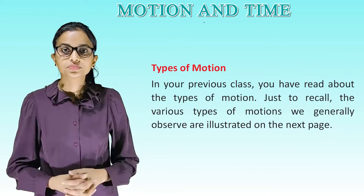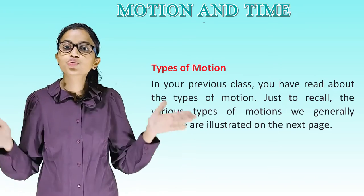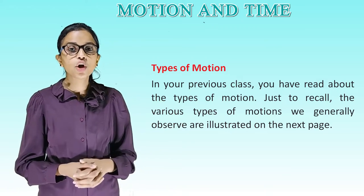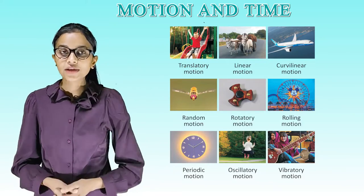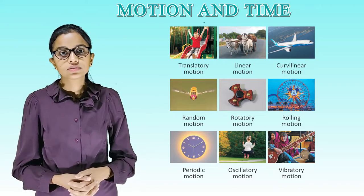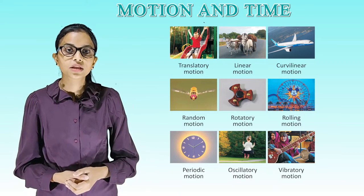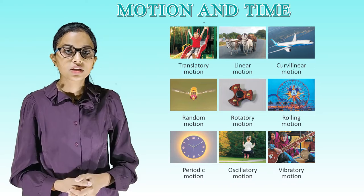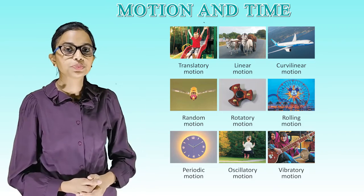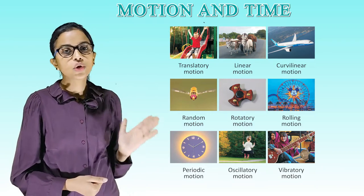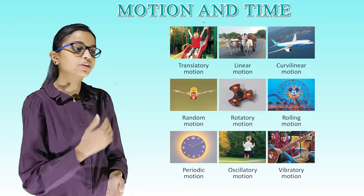Types of motion. In your previous class you have read about the types of motion. Just to recall them, various types of motion we generally observe are illustrated on the next page. So these are the various motions. See these pictures and observe them. Translatory motion, linear motion, curvilinear motion, random motion, rotary motion, rolling motion, periodic motion, oscillatory motion, vibratory motion.